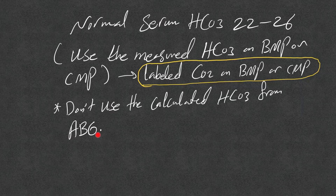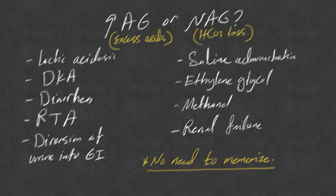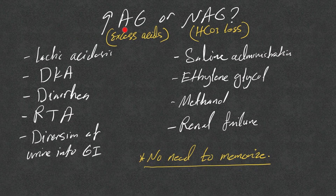Let me give you this exercise — guess if each condition is increased anion gap or normal anion gap metabolic acidosis. Remember: increased anion gap means excess acids; normal anion gap means bicarb loss.